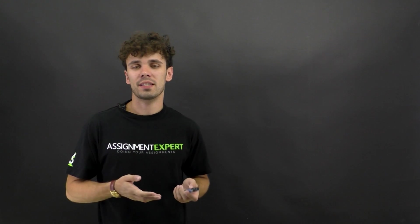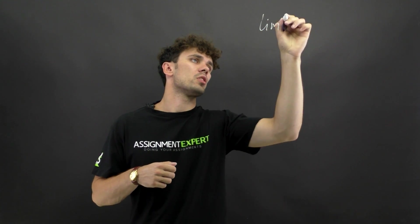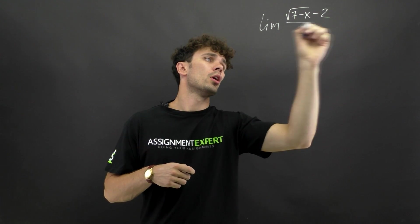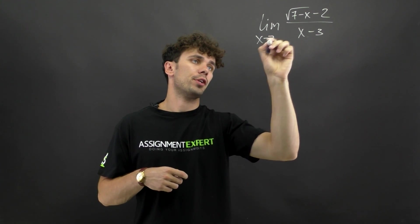Hello guys! This is Assignment Experts channel and in this video we will talk about limits of irrational functions, where x is under a radical sign — or simply under the root — and also x tends to any number including infinity. For example, let's find the limit of the square root of (7 minus x) minus 2, over x minus 3, while x tends to 3.